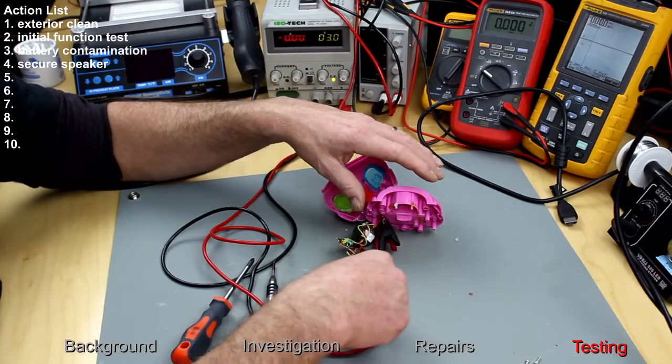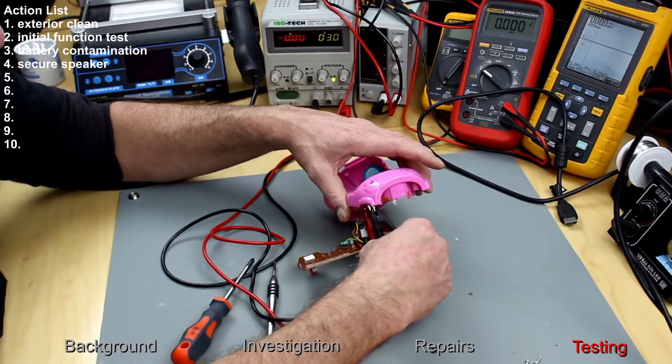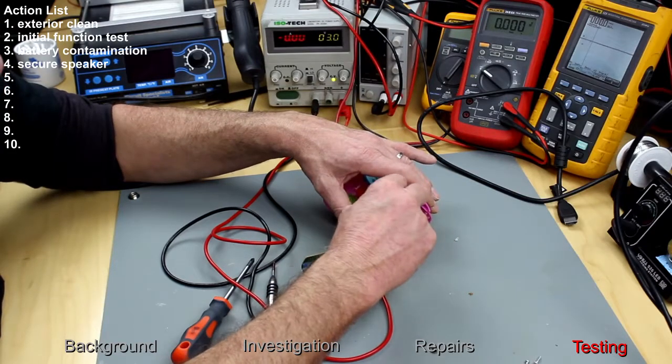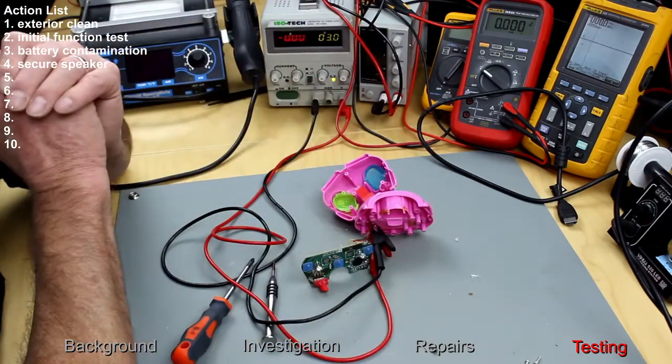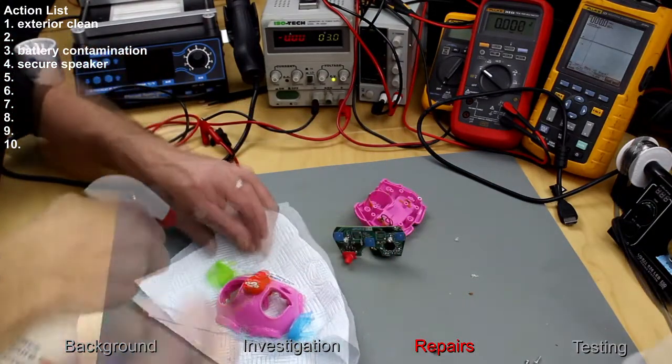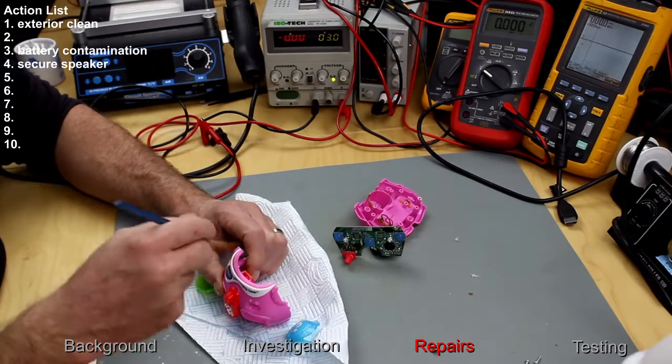So while the soft bits of the play toy are in the washing machine, I will clean up the battery compartment, remount the board and basically have a general clean up. So if you've ever wondered what was inside one of these, now you know.